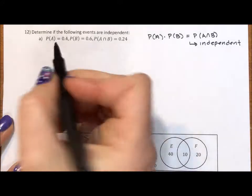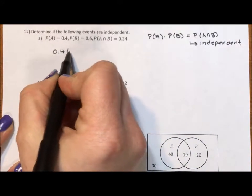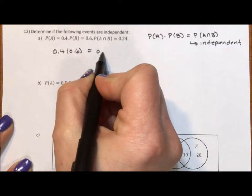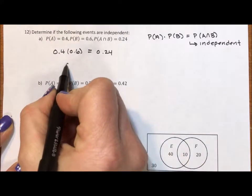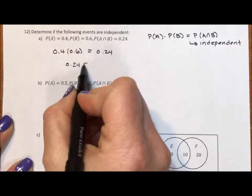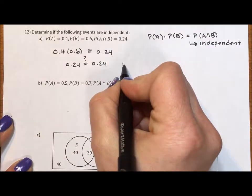So for this first one, all we need to do is test if 0.4 times 0.6 equals 0.24. It's nice when everything is given to you as probabilities. Well, this is 0.24. Does this equal 0.24? The answer is yes, so these are independent.